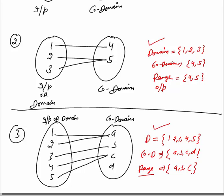Because the function inputs are 1, 2, 3, 4, 5 and function outputs are A, B and C — since A, B and C are the values in the co-domain set that are connected with some input values, these are the range or output. D is the value in the co-domain which is not connected to any input, so it will not come in the range. Now I think you understand the meaning of domain, co-domain and range.